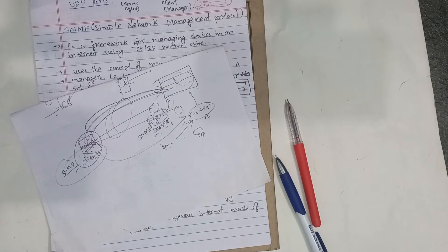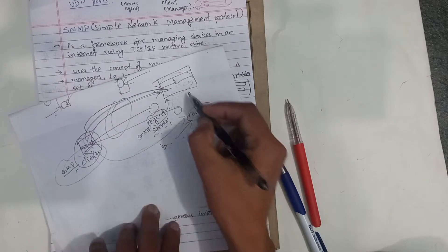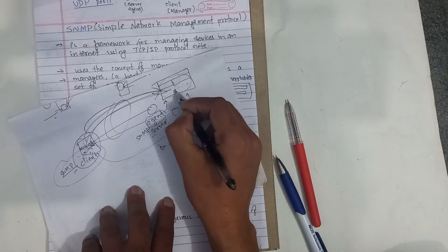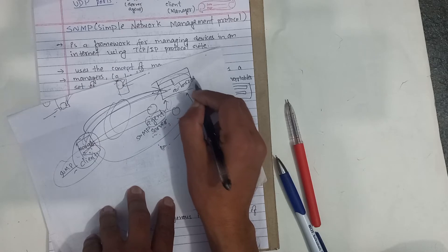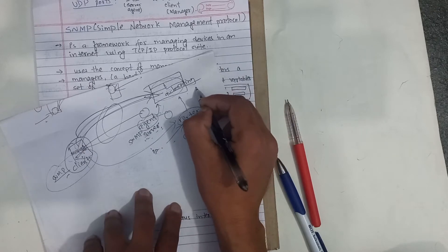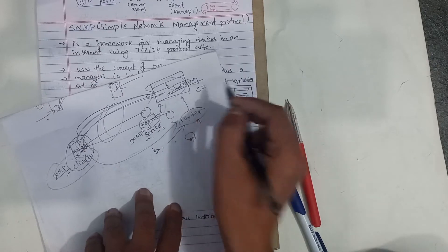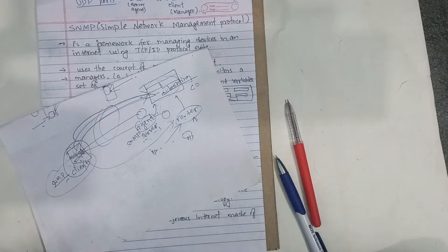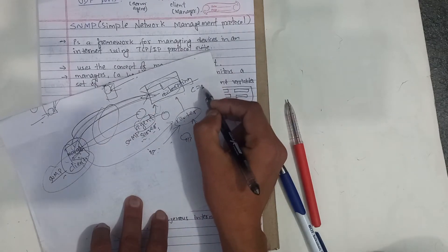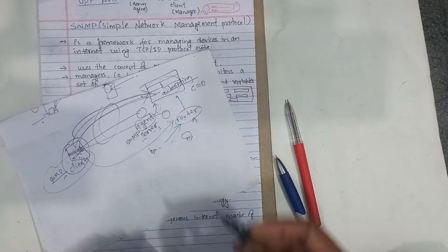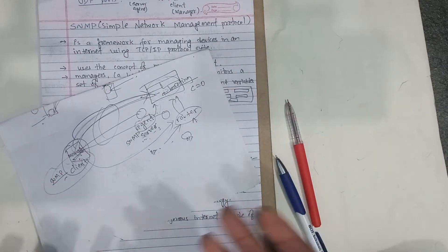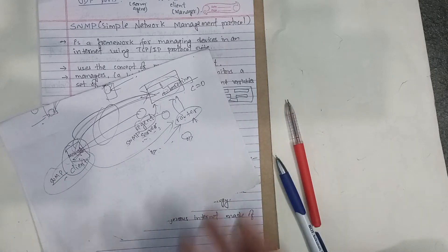The manager can also change values. For example, this is a data bus that is automatically booting. The counter is 0. The manager can change that value — the router can be processed and its value changed.